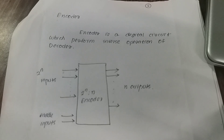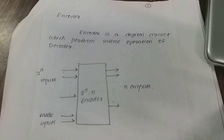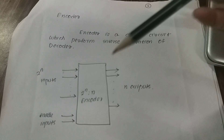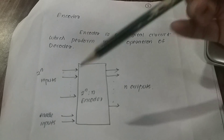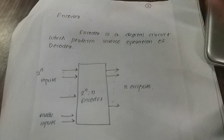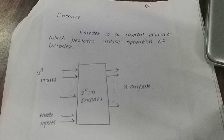The next one is Encoder. An Encoder is a circuit which performs the inverse operation. It has 2 raised to N inputs for maximum input and produces N outputs.